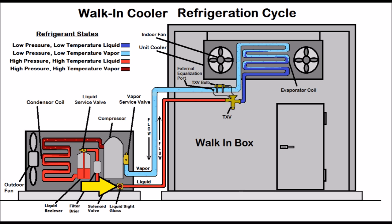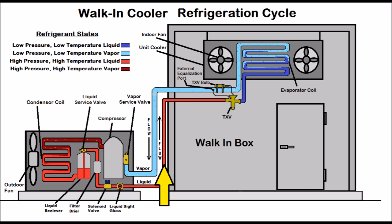Some outdoor units come with the liquid sight glass already there, but it's best to have it closer to the thermostatic expansion valve, right in front of it. As the sub-cooled liquid heads through the liquid sight glass, if you have a solid column of liquid it will be clear — unless there's an obstruction like a clogged filter dryer. It then heads into the thermostatic expansion valve as a high pressure, high temperature, sub-cooled liquid refrigerant. Going through the TXV, which is a metering device, it lowers in pressure and temperature and turns into a low pressure, low temperature liquid refrigerant.